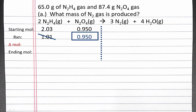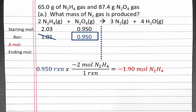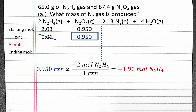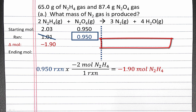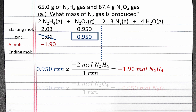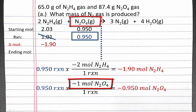To calculate our change in moles, we have to use the number of reactions that our limiting reagent can provide. So to calculate our change in moles for N2H4, we can perform 0.950 reactions, and in each reaction we lose 2 moles of N2H4, so we'll lose 1.90 moles of N2H4. All of our reactants will be used up, so our change in moles will be negative, and our products will be produced, so our change in moles will be positive. For N2O4, with the 0.95 reactions, we'll use up 1 mole of N2O4 for each reaction, so we'll lose 0.95 moles of N2O4.